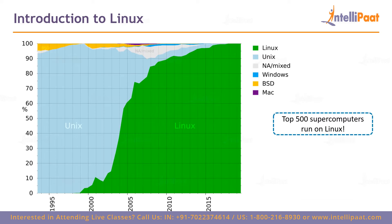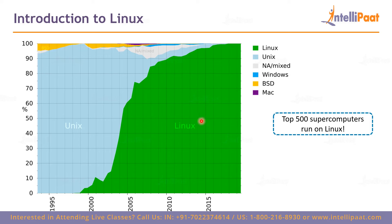Now let us look at supercomputers. Before 2003 or 2004, Unix was dominating the supercomputer market, along with some BSD, Mac, and Windows operating systems. But right now in 2020, the top 500 supercomputers in the world are running on Linux. The entire market is now captured by Linux. All supercomputers need Linux because Linux is lightweight, fast, secure, and reliable.